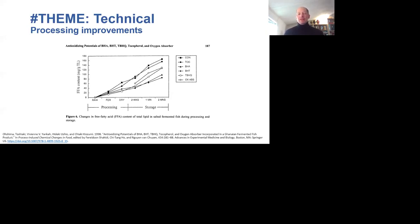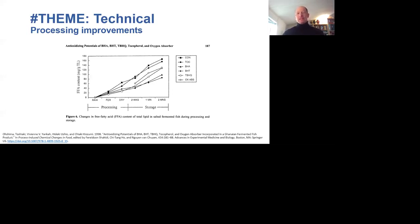An interesting footnote relating to economic implications: in the comparison between these different chemical additives, the authors indicate that one of them — even though it had pretty good outcomes in terms of lipid preservation — was disagreeable from a consumer point of view because it left a reddish color residue on the fish product, making it less marketable. So this footnote suggests both the economic implications and the more obvious health and nutrition implications of this kind of research.